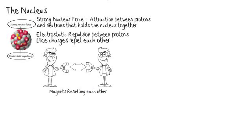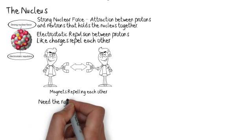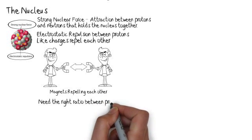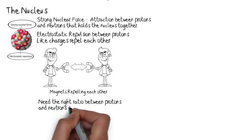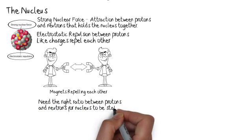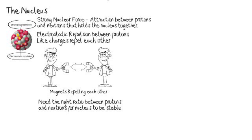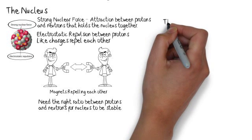That's exactly what happens with the protons. So in order for a nucleus to be stable, we need the right ratio of protons to neutrons for that nucleus to be stable. Without that ratio, the nucleus will break apart.